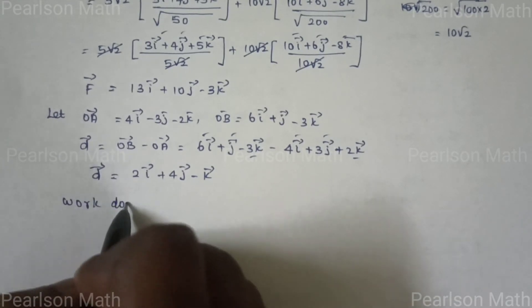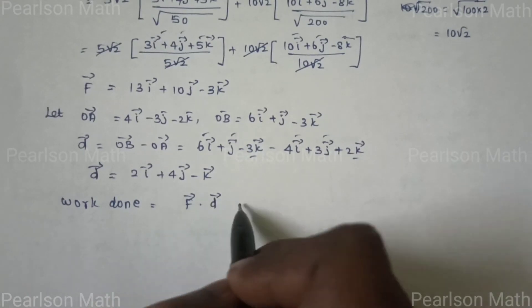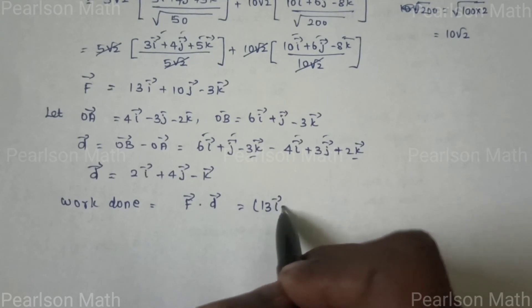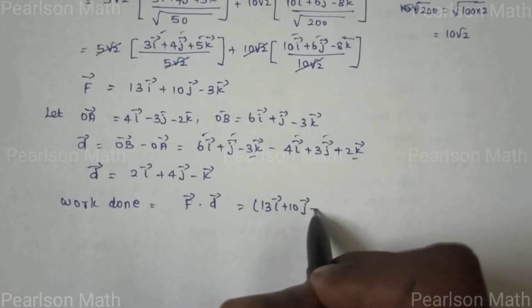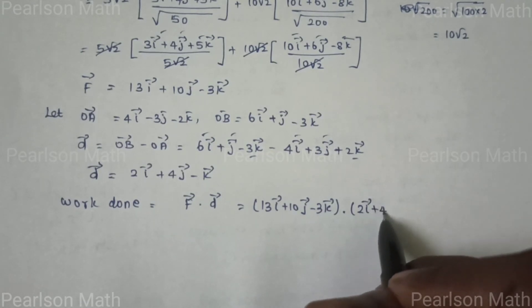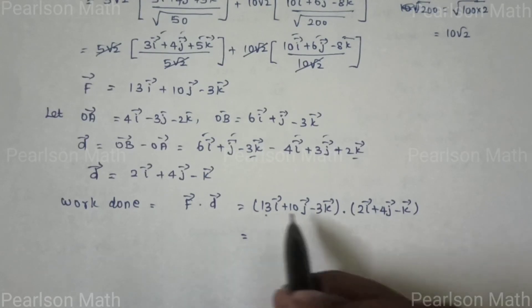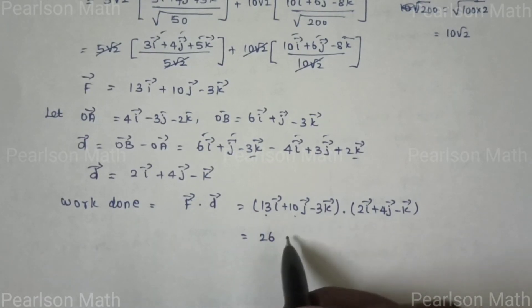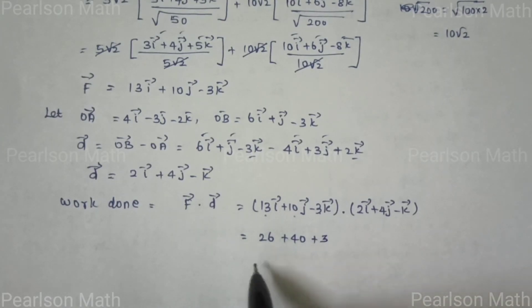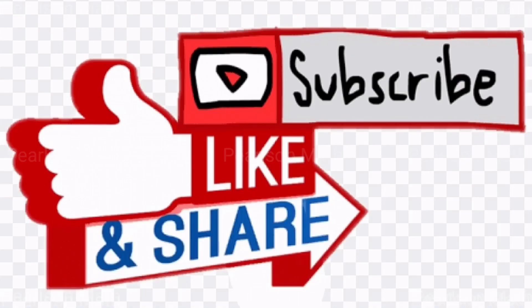Work done formula: W = F · d. So W = (13i + 10j - 3k) · (2i + 4j - k) = (13×2) + (10×4) + (-3×-1) = 26 + 40 + 3 = 69 units.